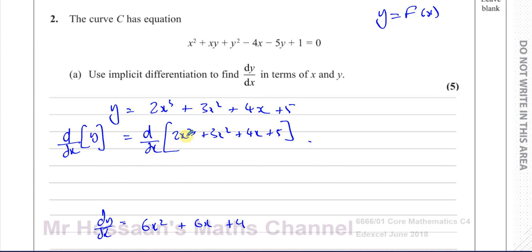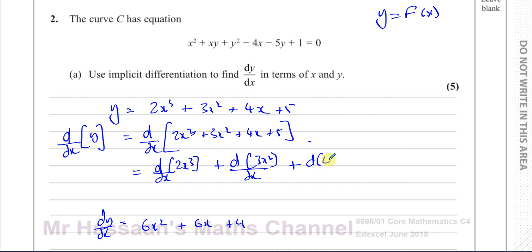With differentiation we can differentiate each term individually. So differentiating 2x³, then 3x² with respect to x, then 4x, then the constant 5 — we end up with 6x² + 6x + 4 + 0. We differentiate each term separately.